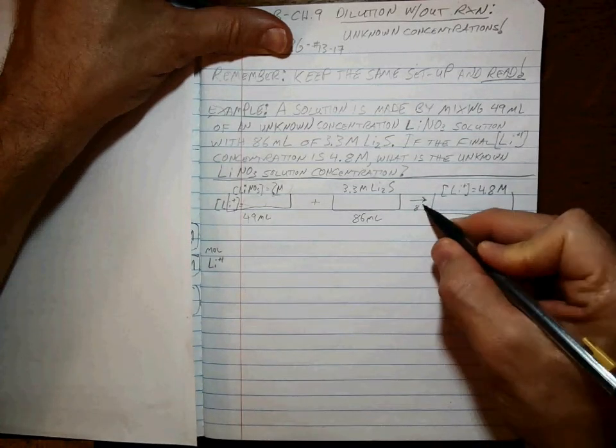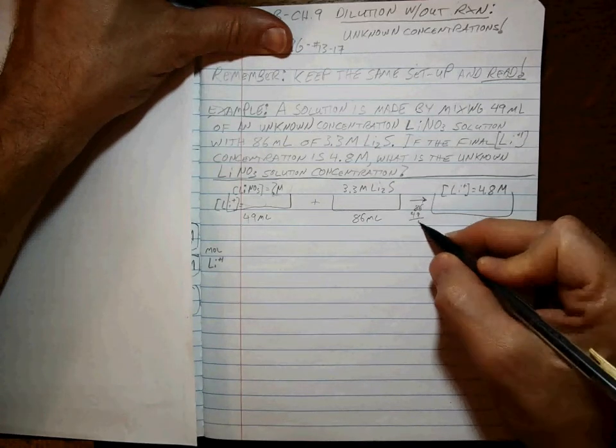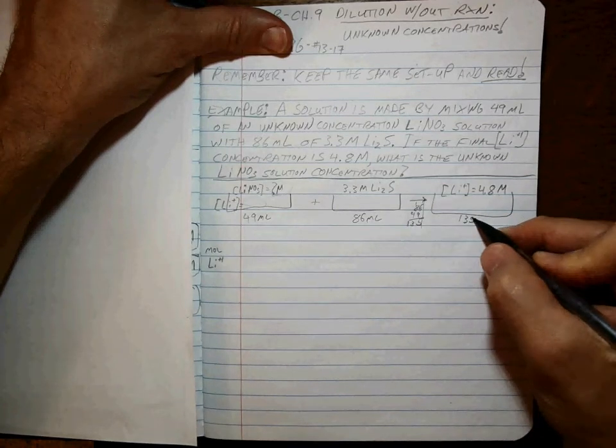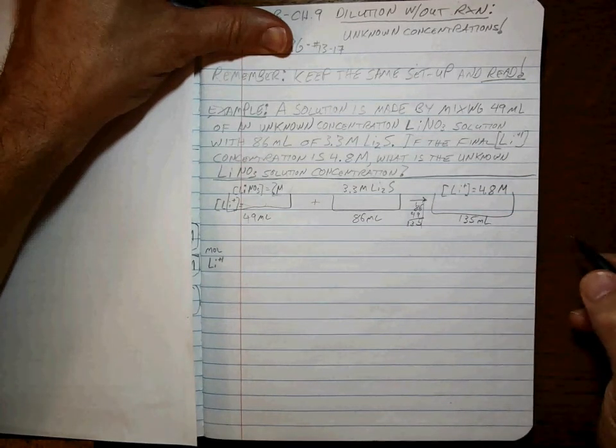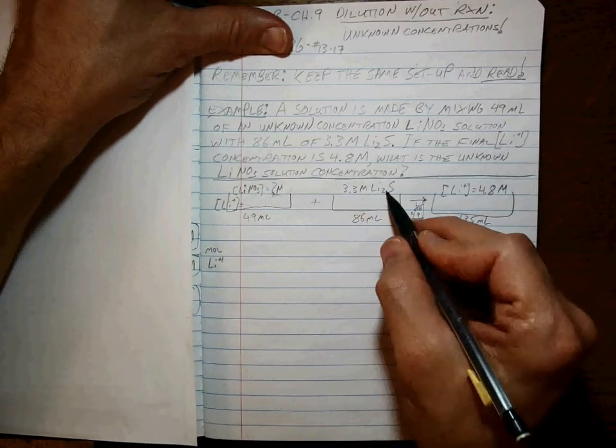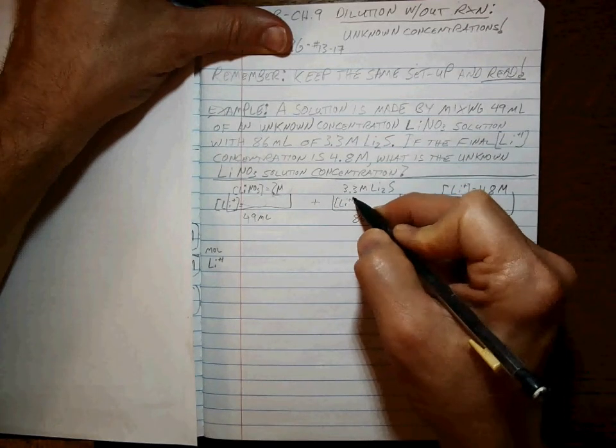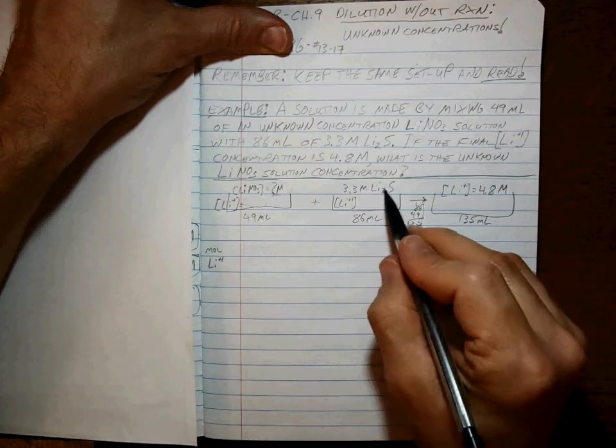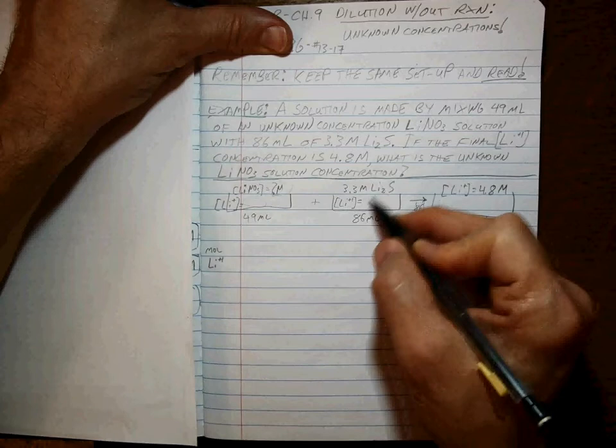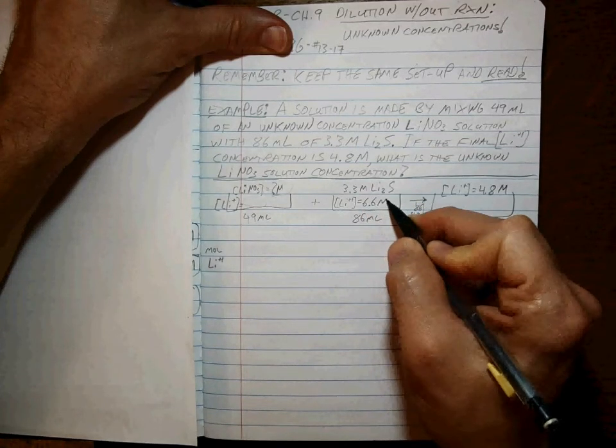We always can add up the volumes. 9, 10, 11, 12, 15... 135 milliliters at the end. We also can find the lithium ion concentration here pretty simple, right? Isn't it double? There are two lithium ions per every one lithium sulfide. So the concentration of the lithium ions is 6.6 molar in this beaker.